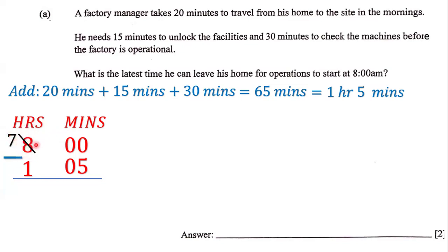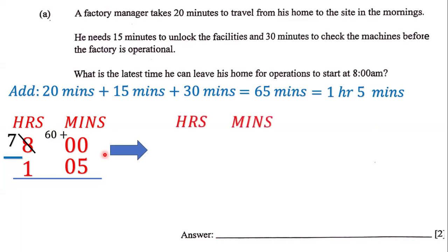When we take away one from eight, that gives us seven. Remember, this is an hour. So when we borrow an hour and bring it over to the minute side, it's no longer one hour — it's actually 60 minutes. We write it as 60 minutes because we are on the minute side and one hour is 60 minutes. So we have 60 plus zero. Now we have seven hours and 60 minutes.